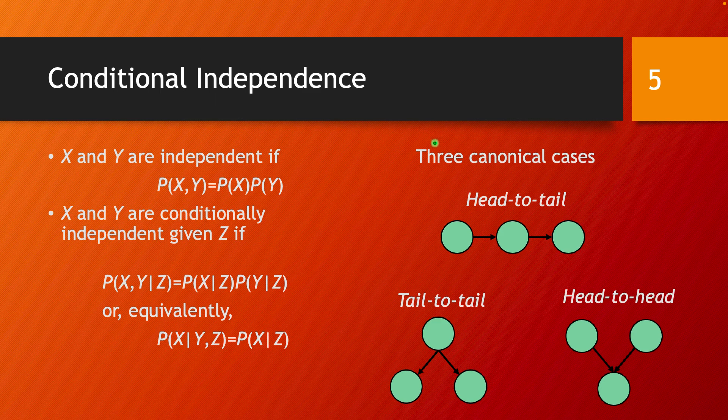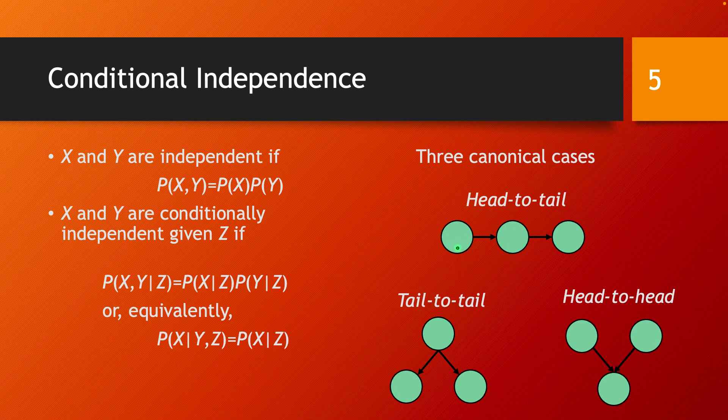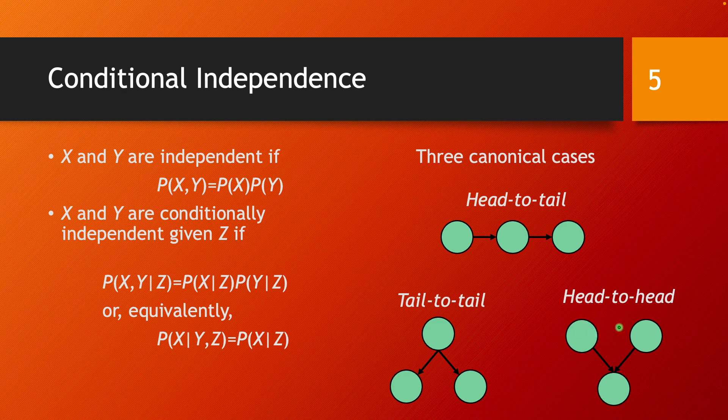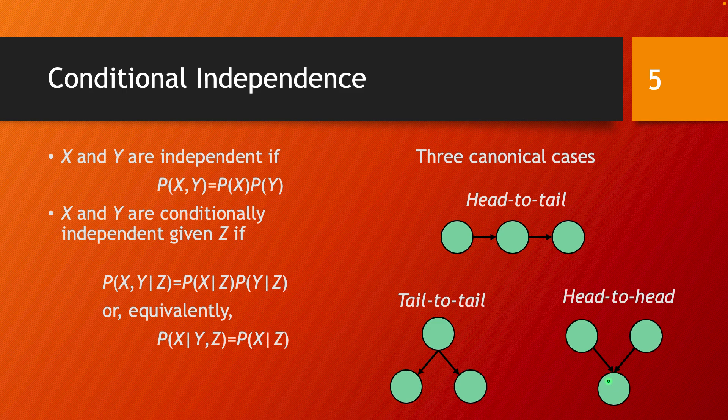There are three elementary or canonical cases of conditional independence that we will discuss in the next videos. On one hand we have the head-to-tail where these two variables are conditionally independent. Then we have tail-to-tail where these two nodes are conditionally independent, and we also have head-to-head where these nodes are conditionally independent. They are independent through this middle variable. But we will discuss all of these three canonical or elementary cases in the next videos.